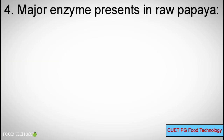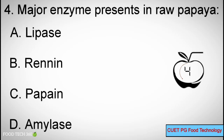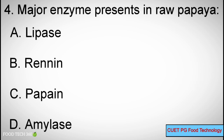Q4: What is the major enzyme present in raw papaya? A. Lipase, B. Renin, C. Phytin, D. Amylase. Correct answer: C. Phytin.